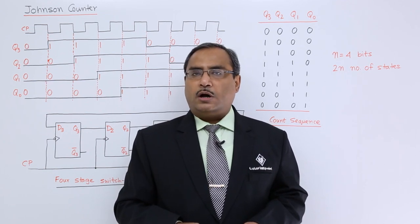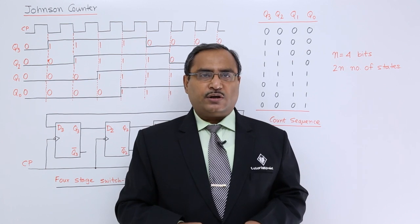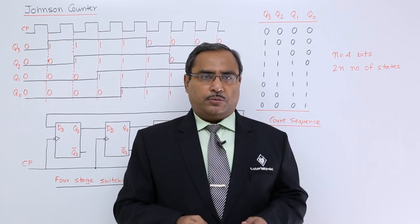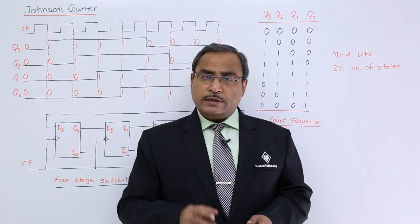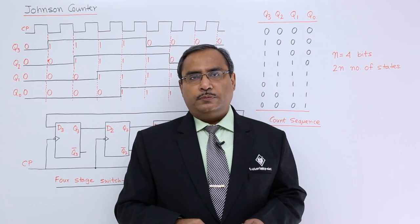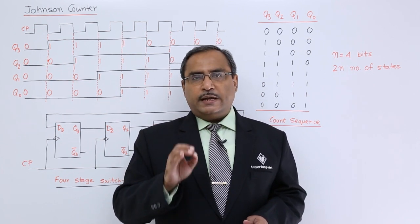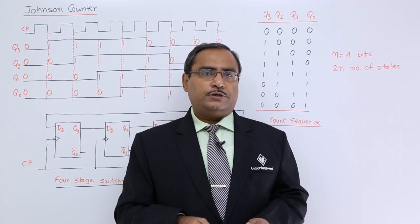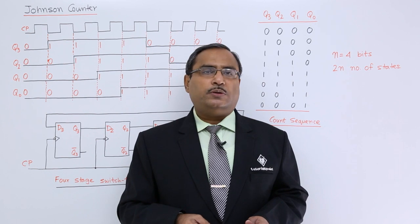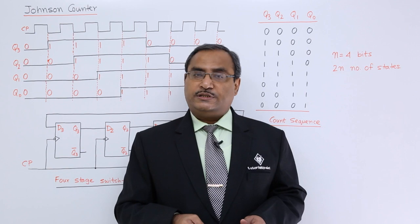We shall discuss Johnson counter here. Johnson counter can also be called as complemented switch tail or ordinary switch tail counter. Johnson counter is that very counter whose asynchronous implementation is not possible. In case of Johnson counter, if there are n bit Johnson counter, if we require n number of flip-flops for the construction of the Johnson counter, then the counter will have 2 into n number of states.